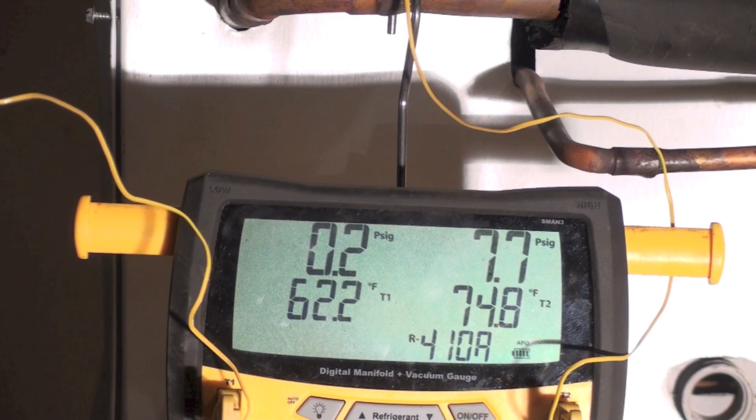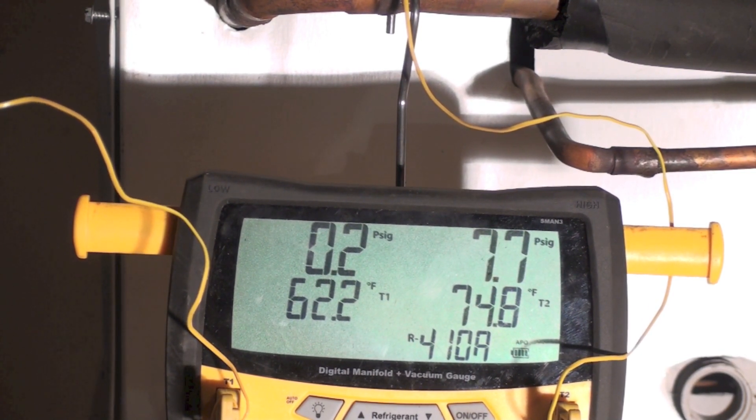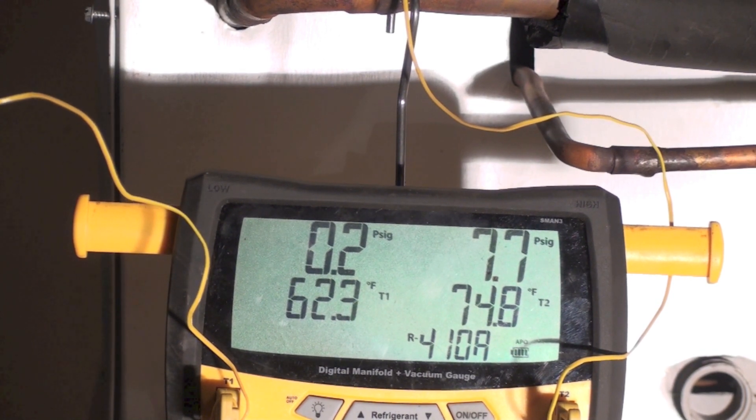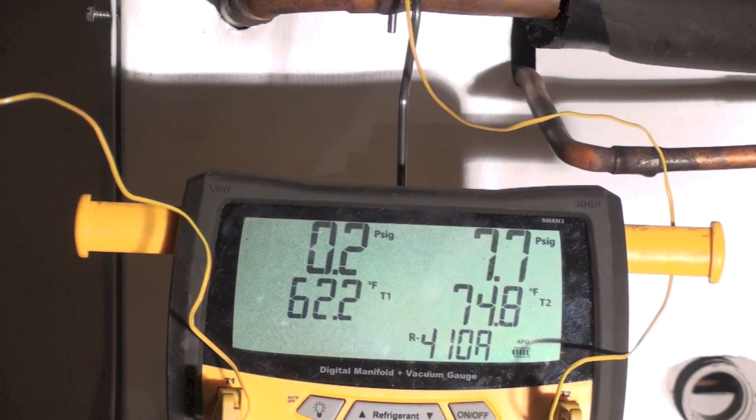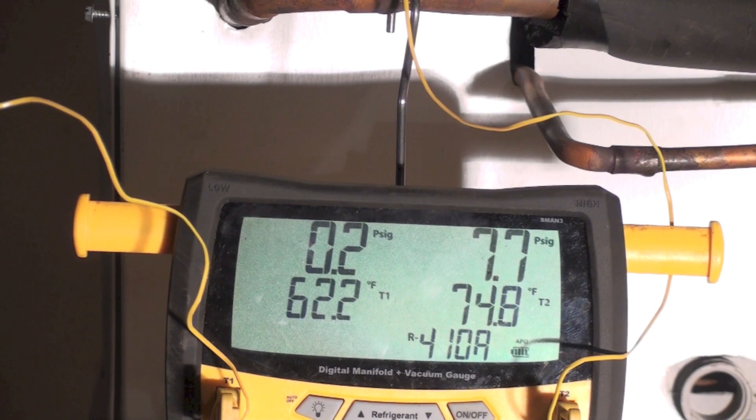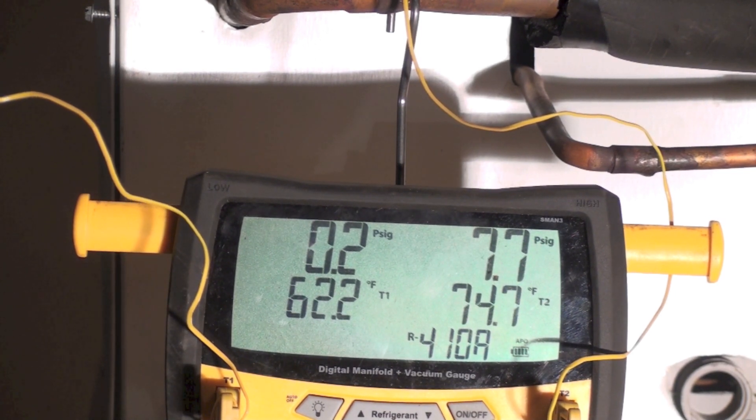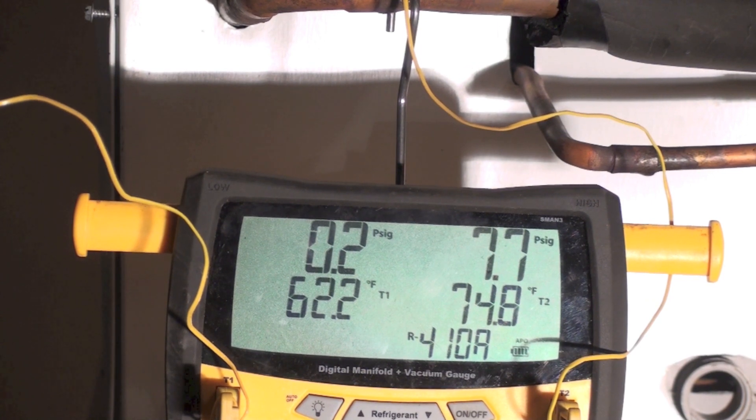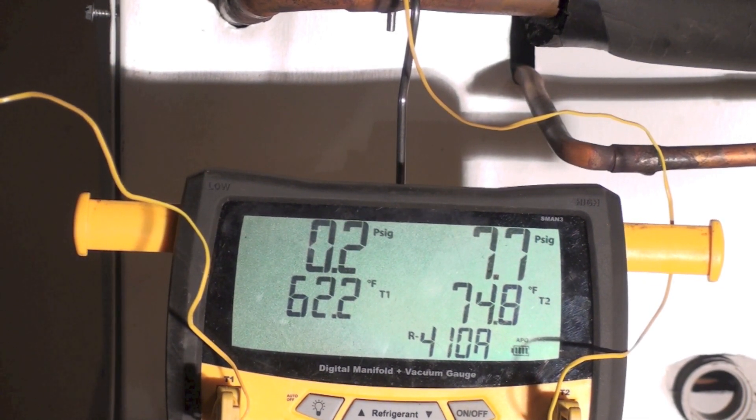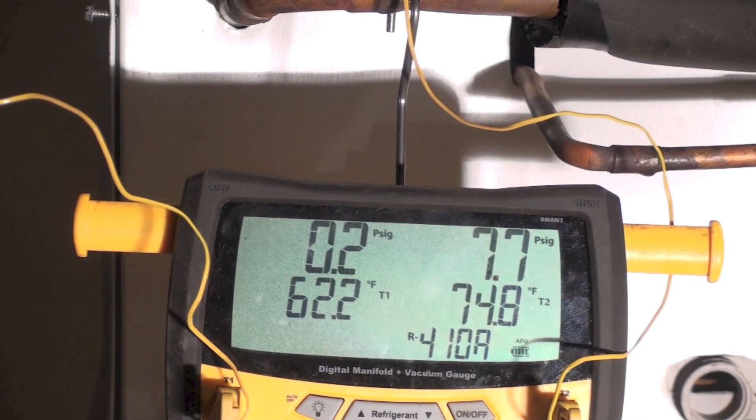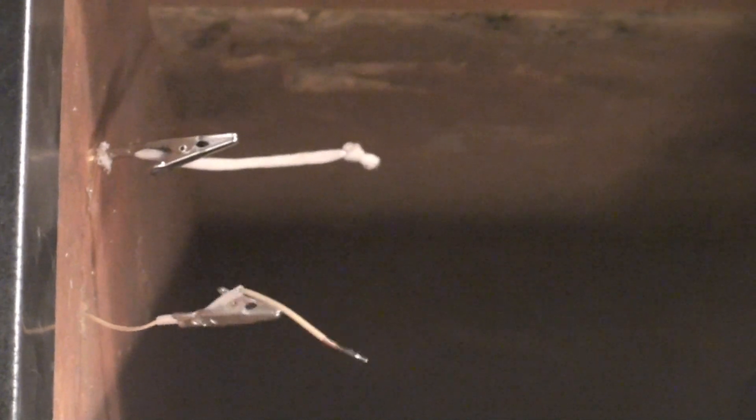So it's simply wet bulb, dry bulb. Now originally what we had is called a sling psychrometer. It was a little doohickey that had a regular thermometer, these old bulb thermometers with mercury in the bulb. One of them just read air temperature, just like that one does on the bottom.